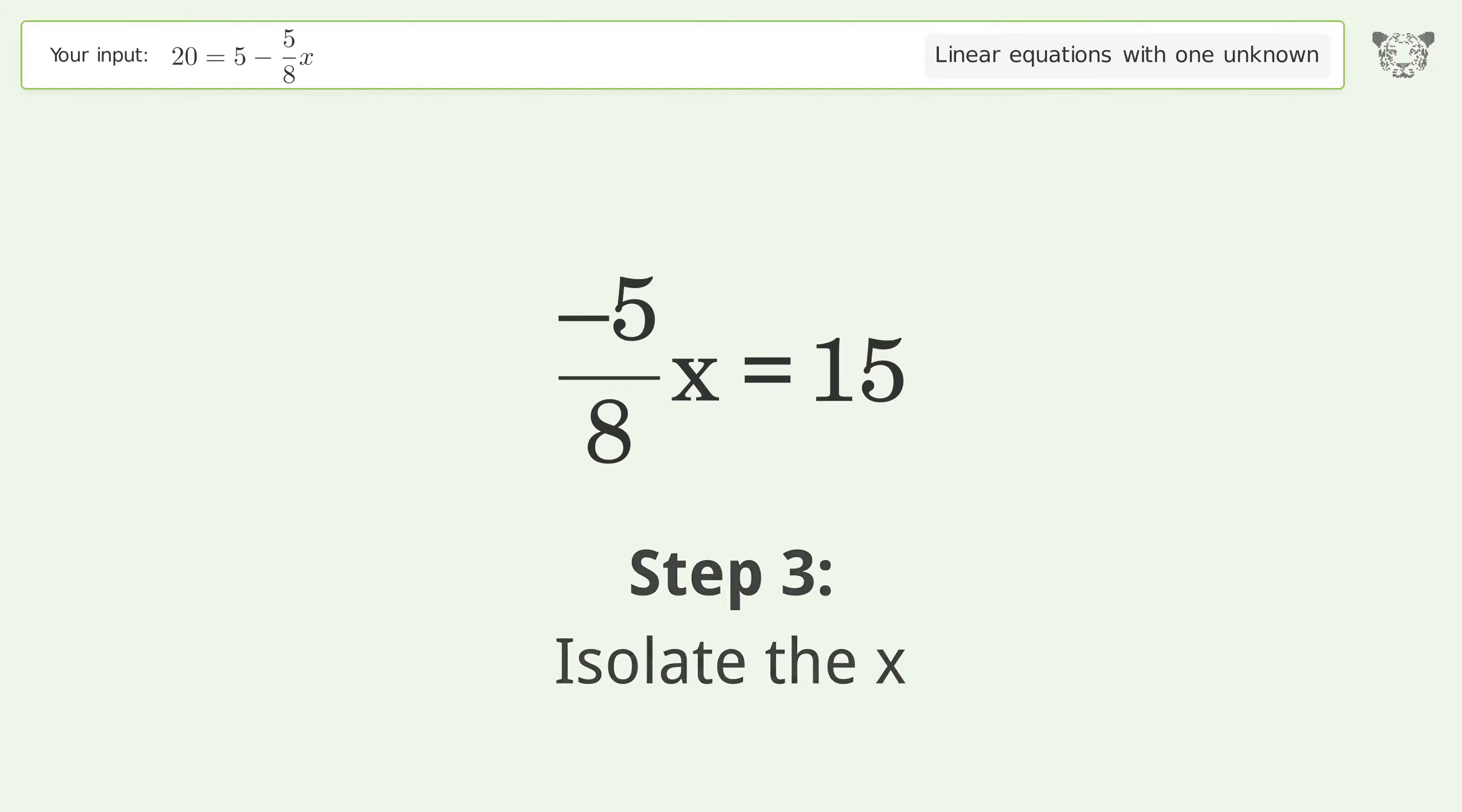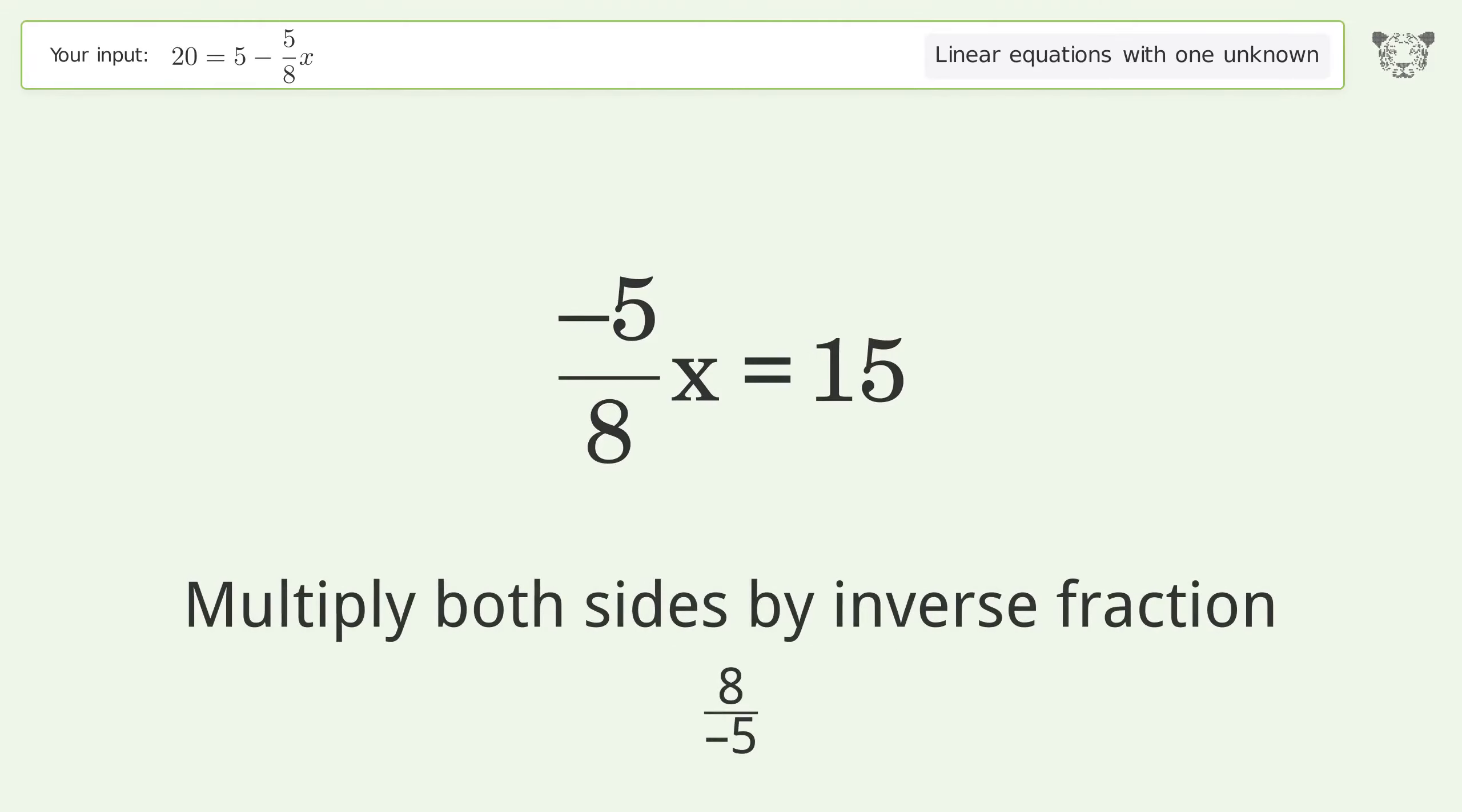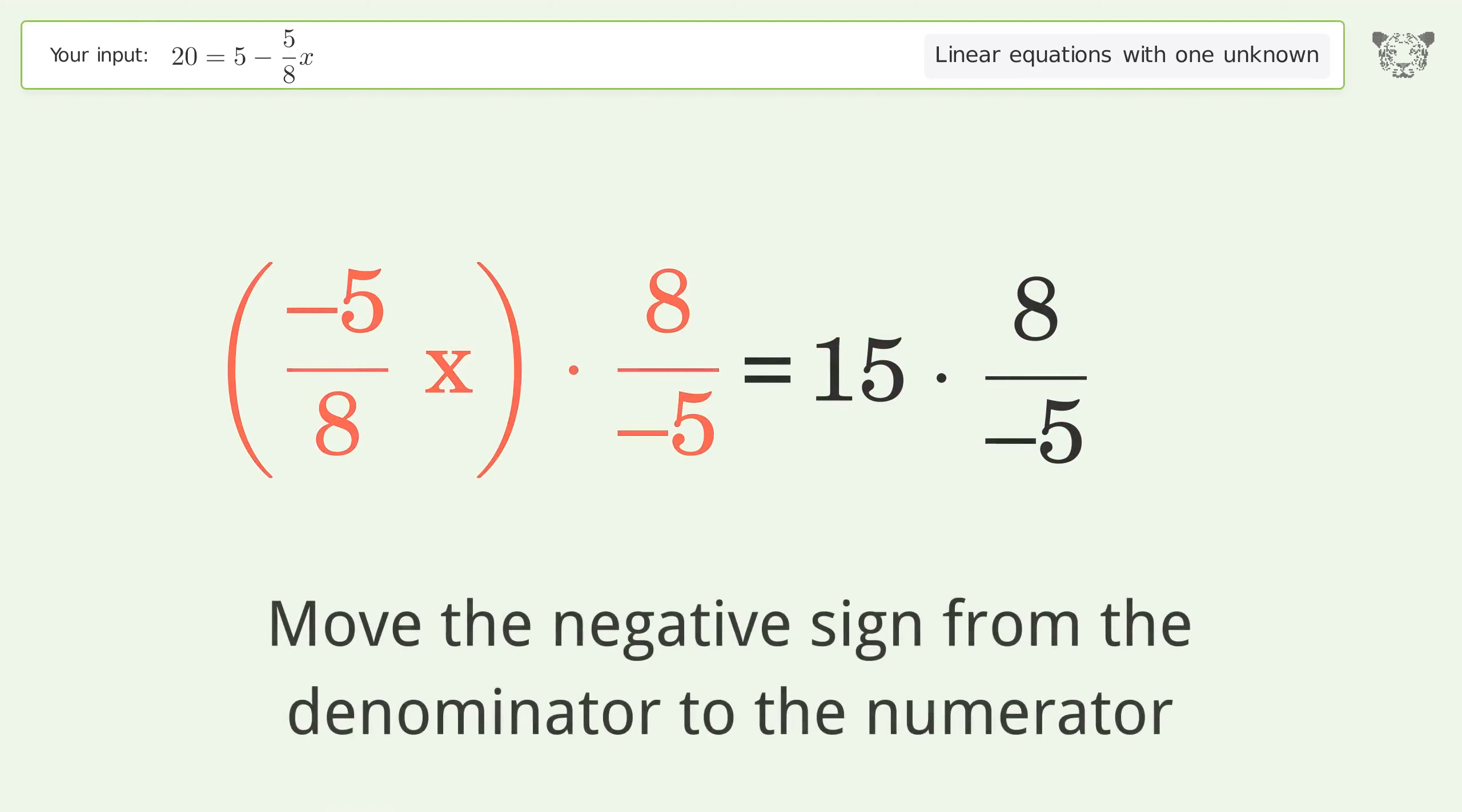Isolate the x. Multiply both sides by inverse fraction 8 over negative 5. Move the negative sign from the denominator to the numerator.